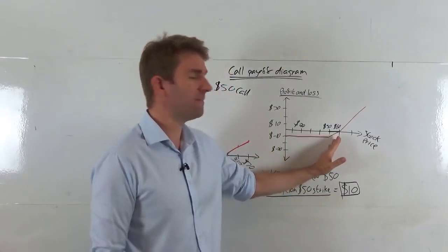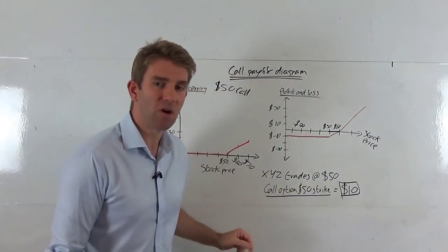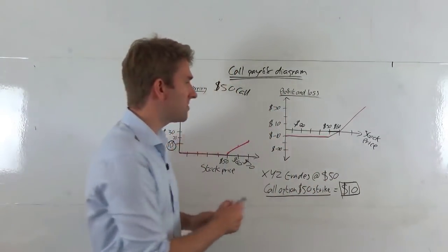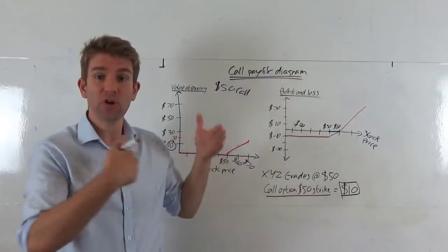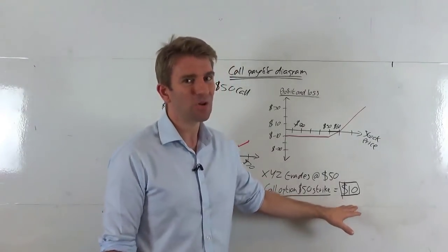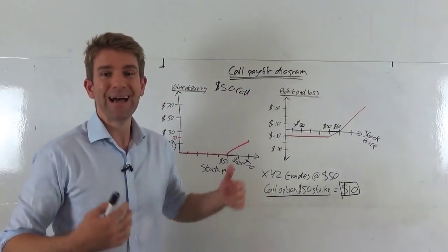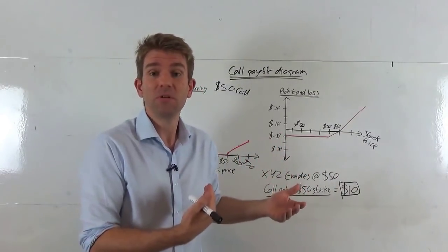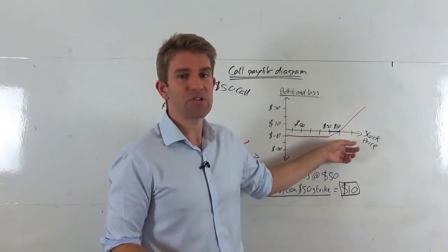And that's going to be the same for anything up to $50. At $50, things start changing, but the value of that option is still zero, so you're still losing the $10 you paid. Now things get interesting at $60 — that option has got $10 of value, because you can buy something at $50 that's currently trading at $60. However, we just paid $10 for that option, so we haven't made any money. $60 is our breakeven point.